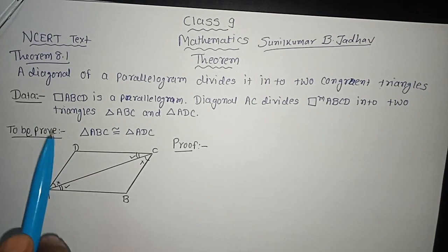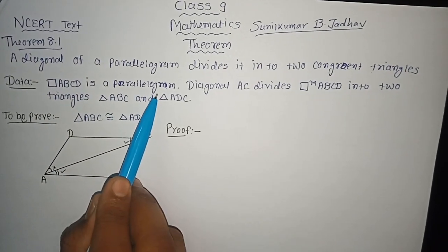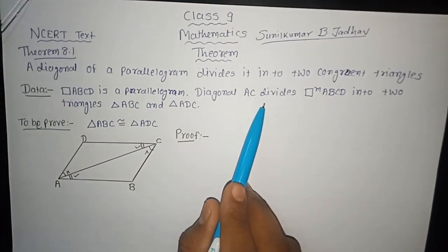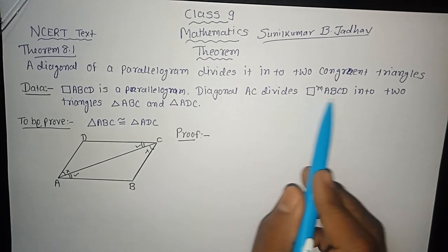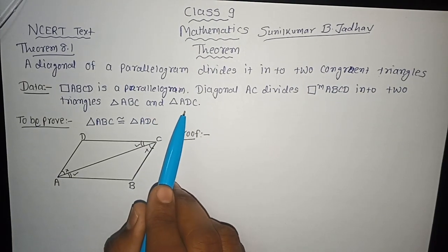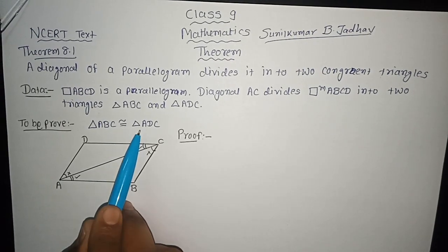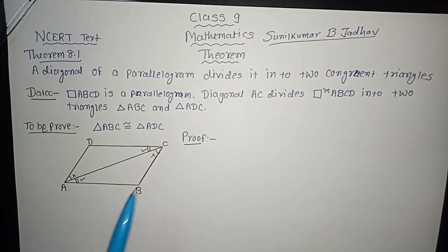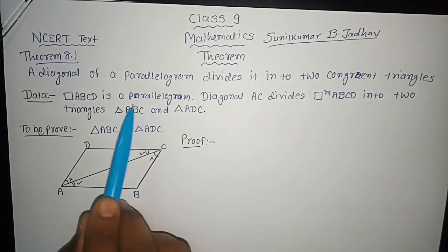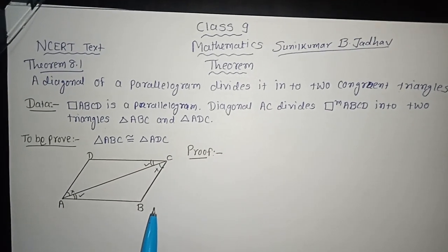Now, what is the data for this theorem? Quadrilateral ABCD is a parallelogram — that is what is given. We draw the figure showing ABCD as a parallelogram. You know the characteristic of the parallelogram: opposite sides are always parallel and equal.